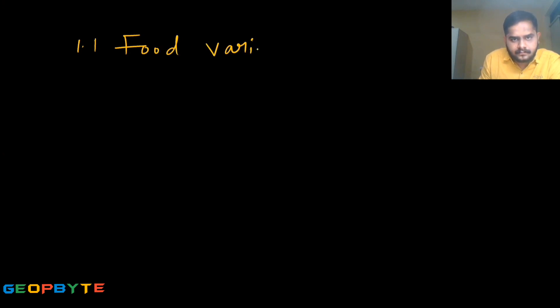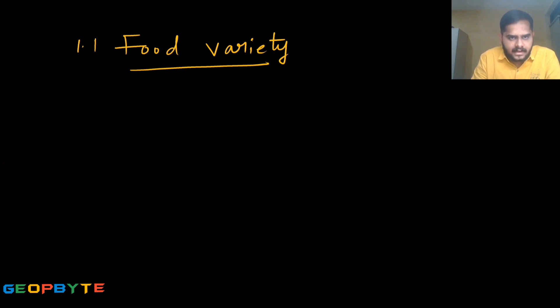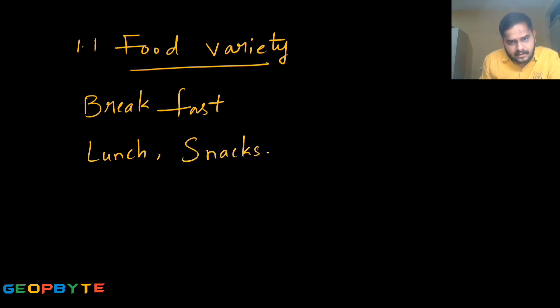1.1 Food Variety. Daily, we eat at least four times a day and we eat different types of food in different ways. Food is an essential component for humans. We eat food in breakfast, lunch, snacks, and dinner.